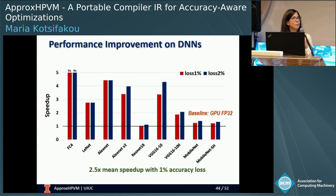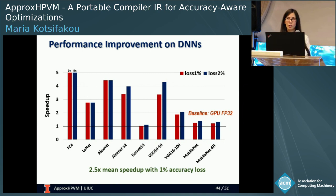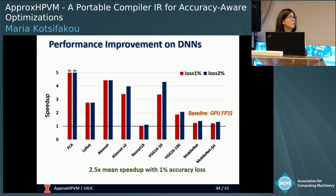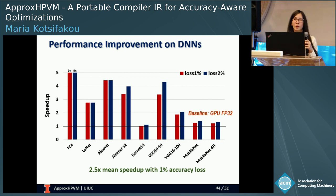This graph shows the performance improvement for our DNN benchmarks. The X-axis shows the DNN benchmarks and the Y-axis shows speedup normalized to the baseline. The red bar shows results for accuracy loss of one percentage point, and the blue bar for two percentage points. For almost all benchmarks, we see significant speedup improvements — up to 9x for the FC4 benchmark — with a mean improvement of 2.5x for one percent accuracy loss.